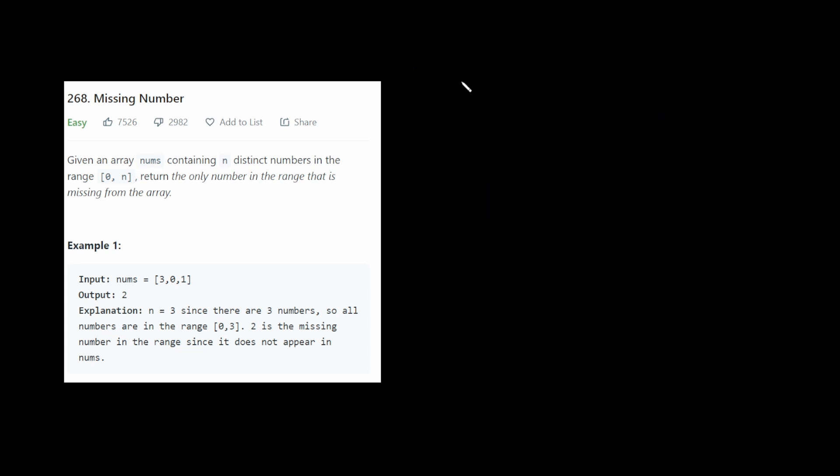So the most optimal solution here is to do bit manipulation. First, we have to discuss XOR. Now the way XOR works is it goes through for all the bits in two numbers and sees if only one of the bits is a 1, then it returns 1.